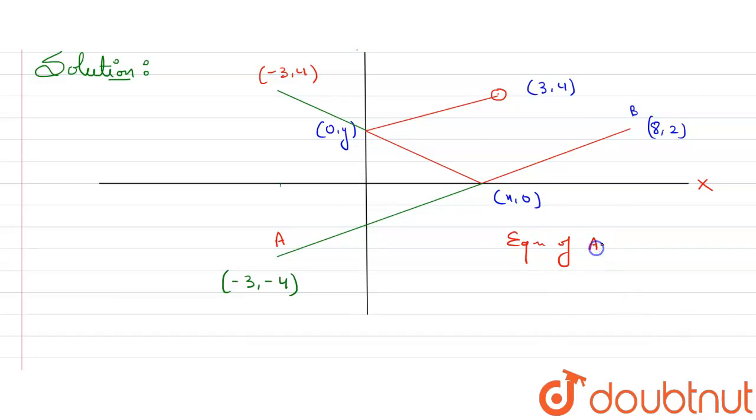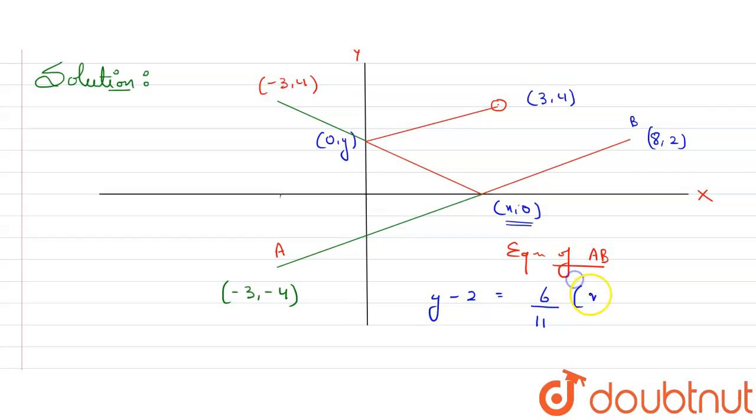Now if I'll find the equation of line AB, we know its formula. It will be y - 2 equals to slope - slope will be y2 - y1, that will be 2 - (-4), so it will be 6 here, and 8 - (-3), so it will be 11 here. It will be x - 8 here. This is the formula for equation.